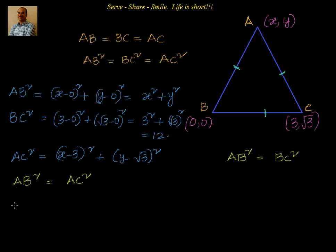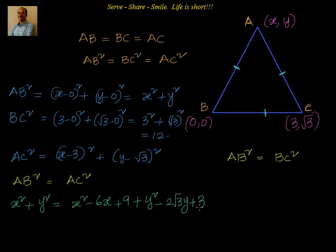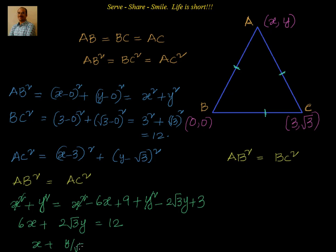Setting AB² = AC²: x² + y² = (x − 3)² + (y − √3)² = x² − 6x + 9 + y² − 2√3·y + 3. Cancelling x² + y² from both sides, we get 6x + 2√3·y = 12. Dividing by 6: x + y/√3 = 2.